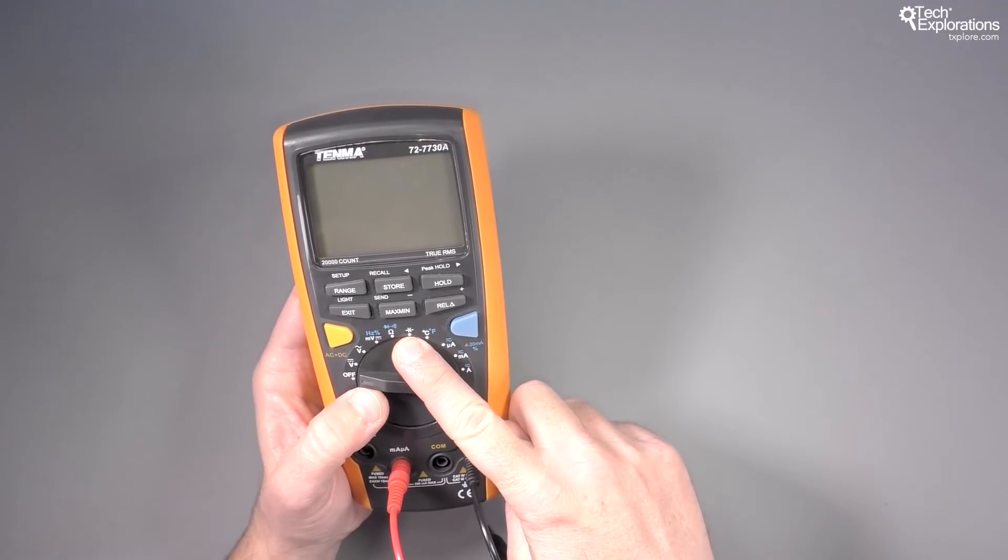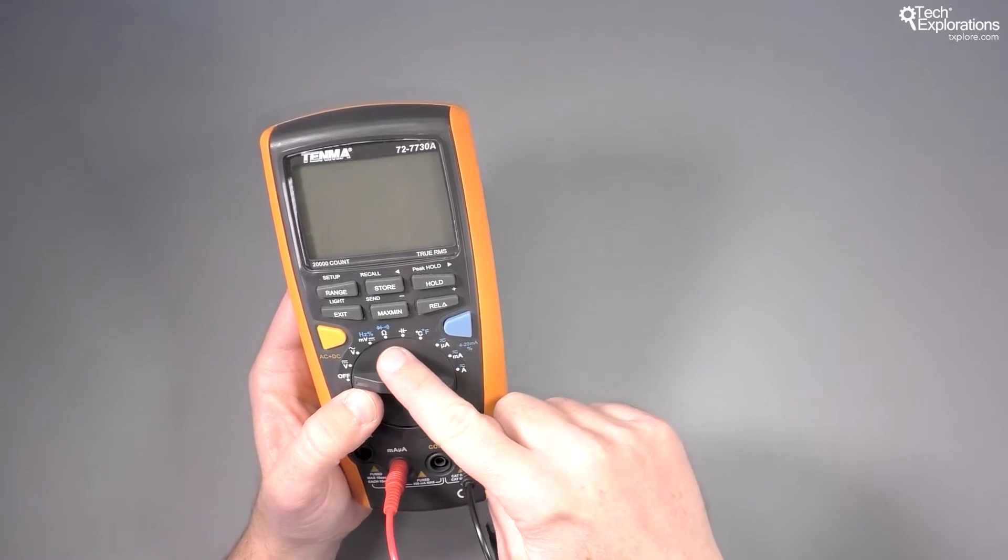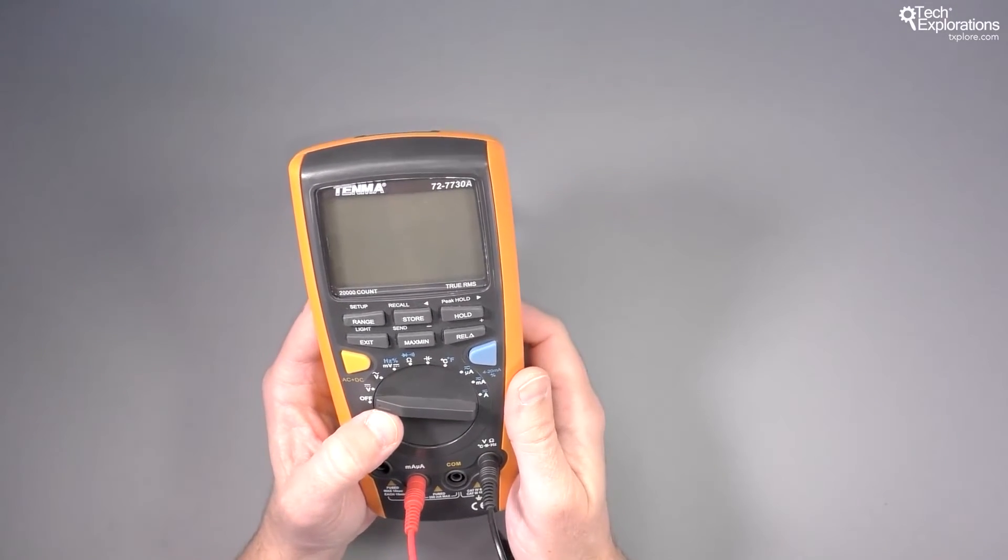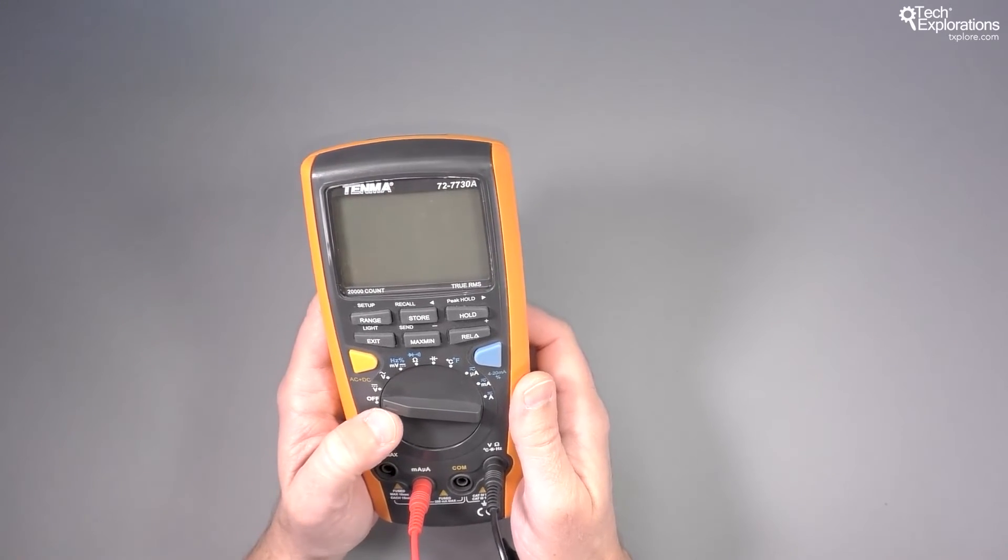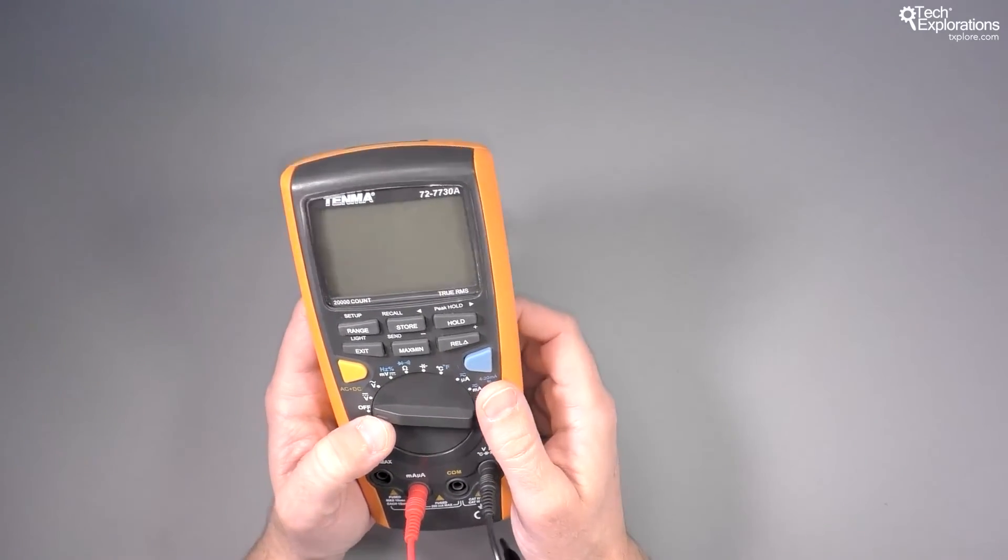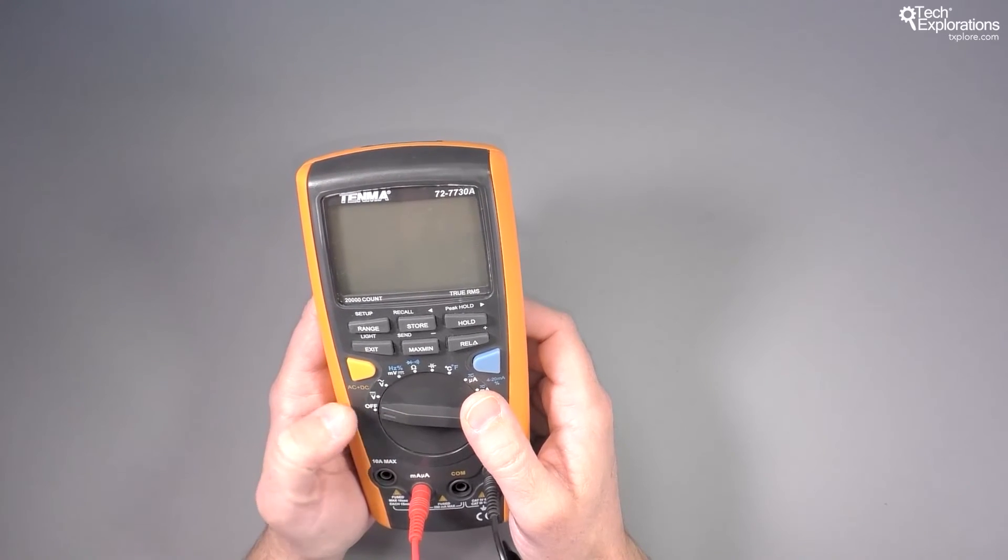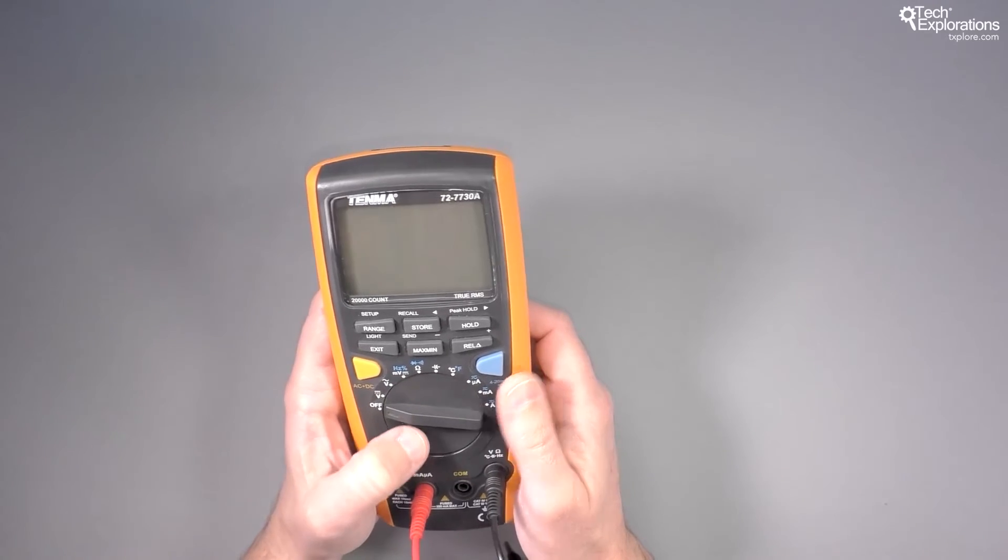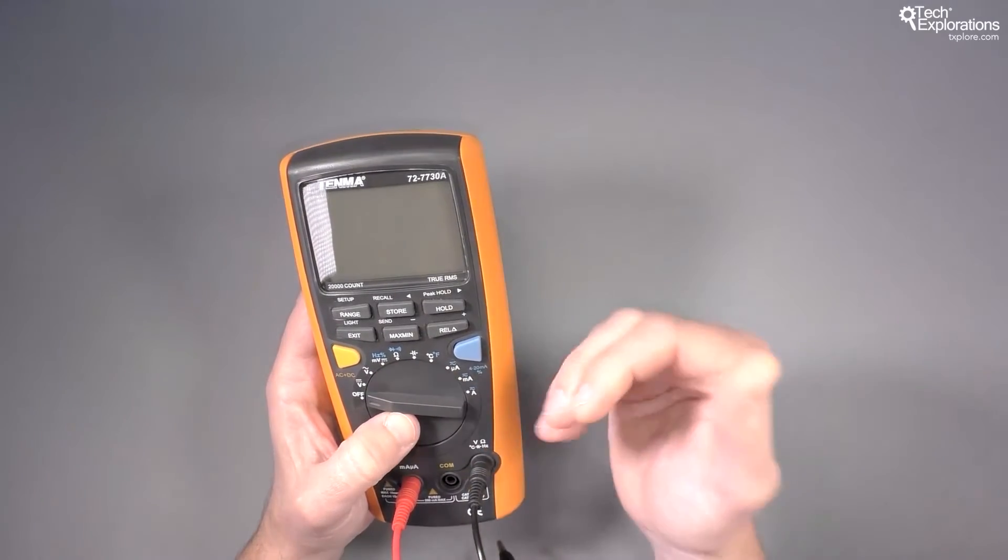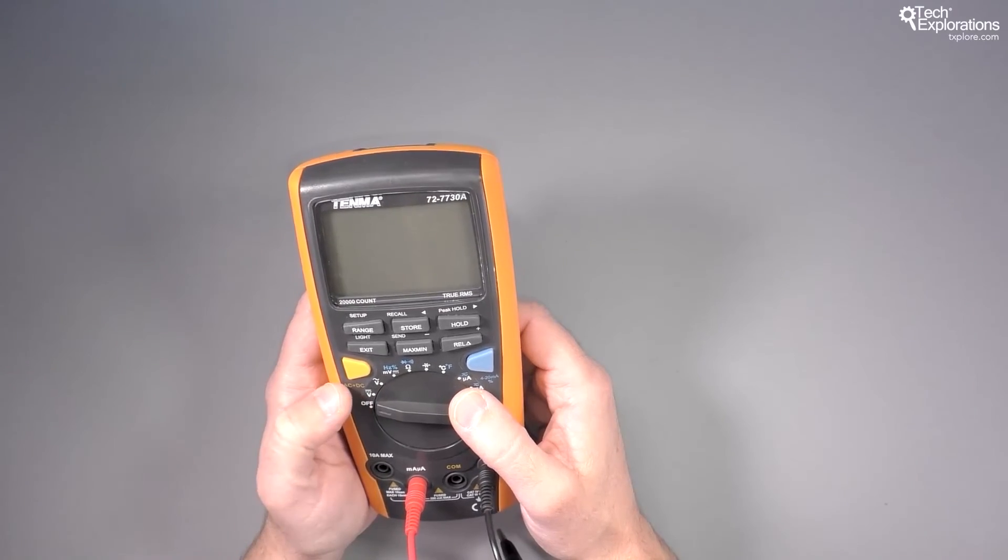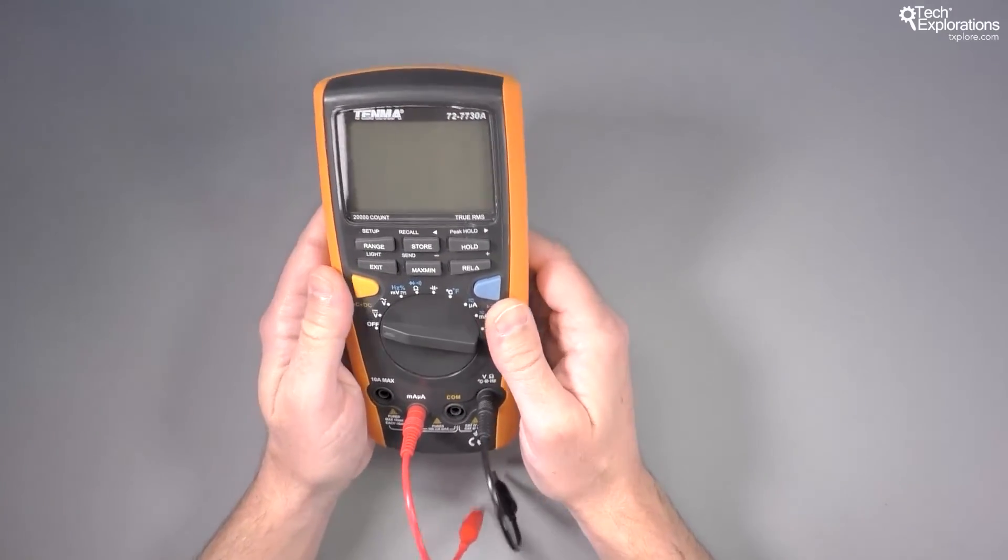And the diode test feature. Even the cheapest $10 multimeters these days have these features on them. If yours doesn't, again no big deal. You don't really need to go out and buy one just for these two functions, at least not for the purposes of understanding the content in this course. Apart from this particular multimeter...